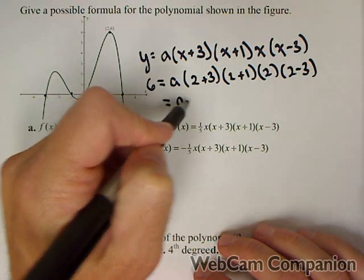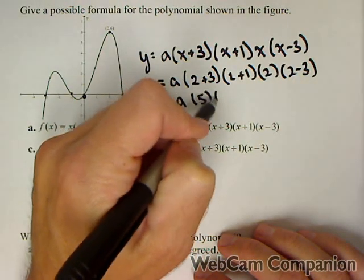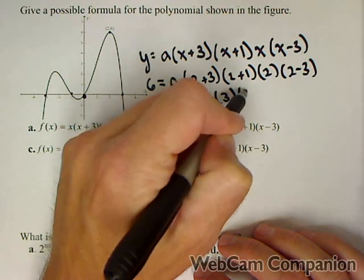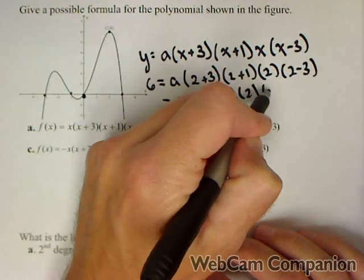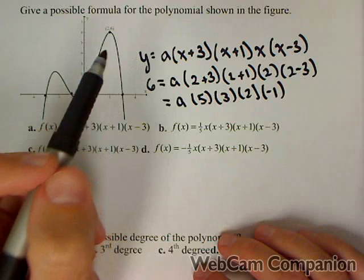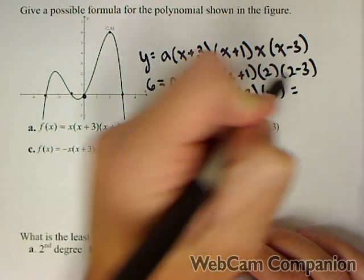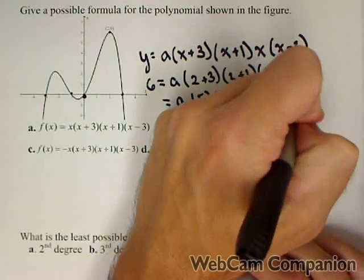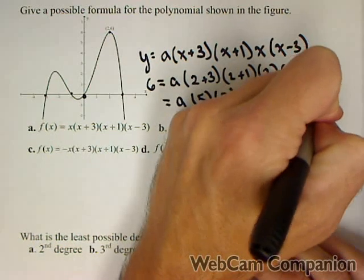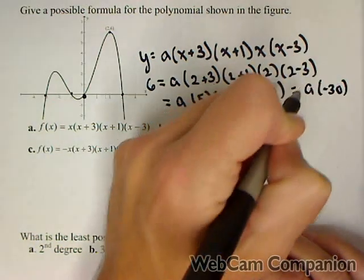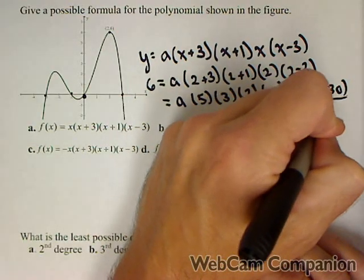And this equals a, we have five times three times two times negative one, and that's going to be a times negative thirty. So solving for a by dividing by negative thirty,